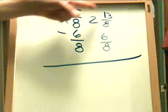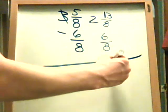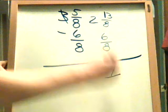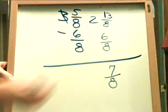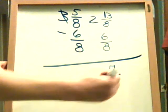So 13 over 8 becomes your new numerator. So now 13 minus 6 is 7 eighths. You never subtract denominators. And the 2 comes down, 2 and 7 eighths.